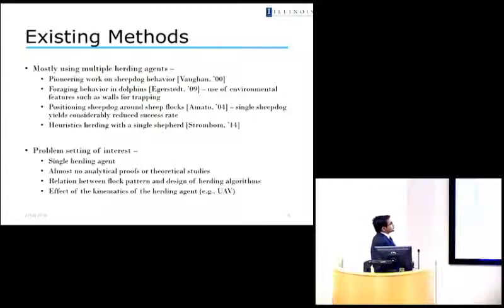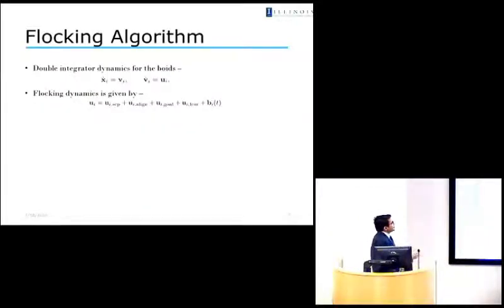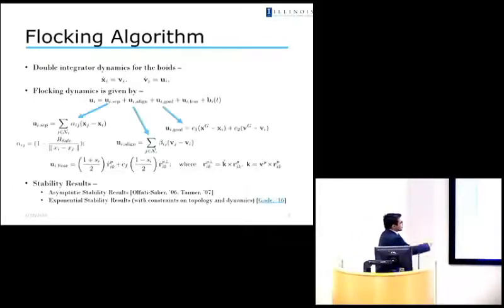So to begin with, the first roadblock that we're going to face is how do we model the flock. There has been significant amount of work in this field in the past three decades or so. So what we'll be doing is that we'll be using a double-integrator model for the birds. So essentially, there's this position, you differentiate it, you get velocity. You differentiate velocity, you get acceleration. And we generate this flock by allowing each of the birds to have these four or five steers. The first term is essentially a separating steer.